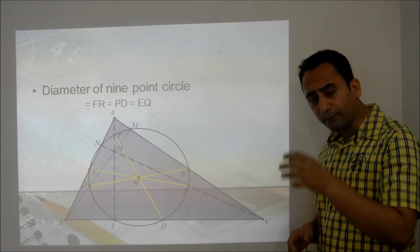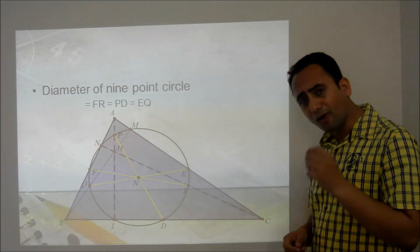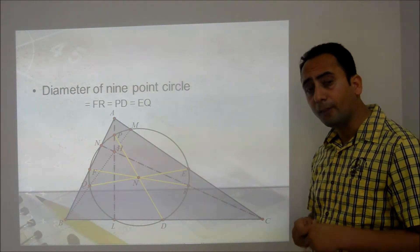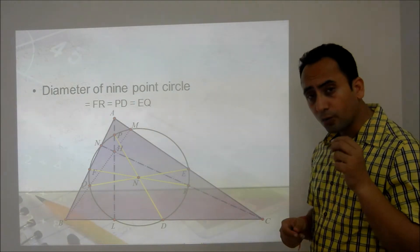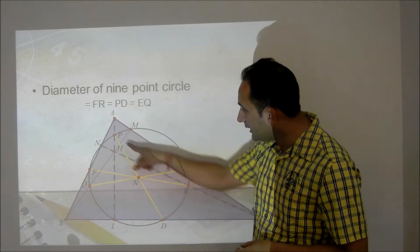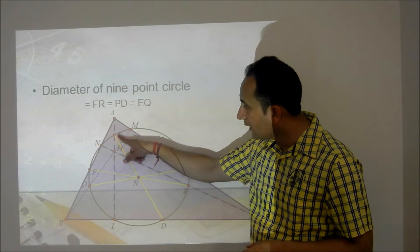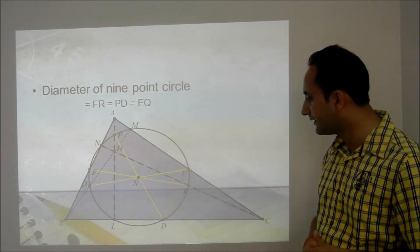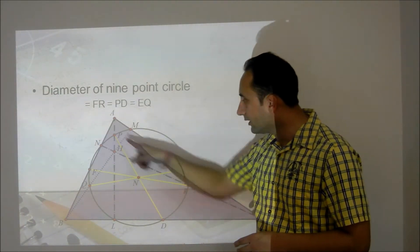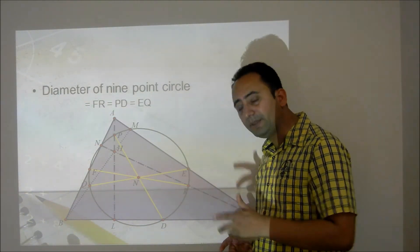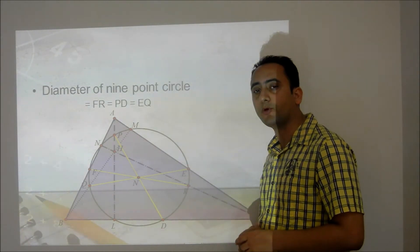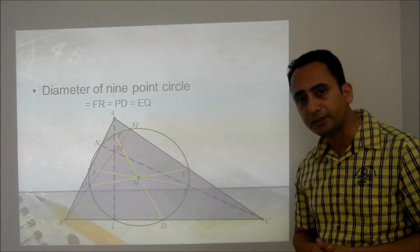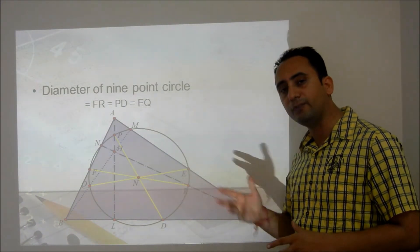A very important property: the line segment PD — where P is the midpoint of a vertex-to-orthocenter segment and D is the midpoint of the opposite side BC — is a diameter of the 9-point circle. Similarly, segments FR and QE are also diameters of the 9-point circle.